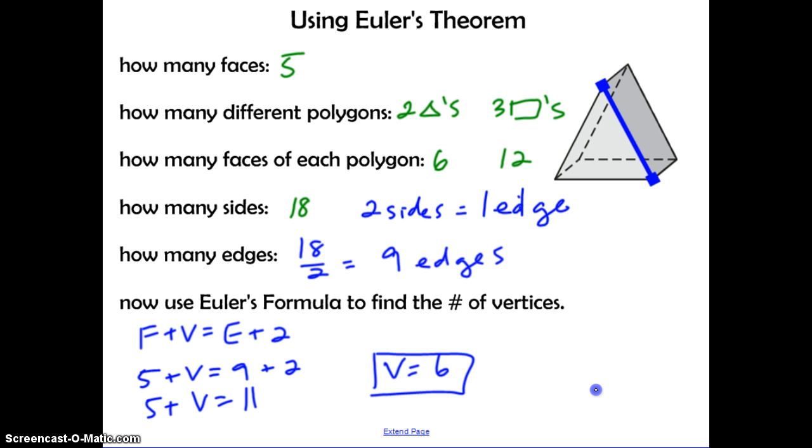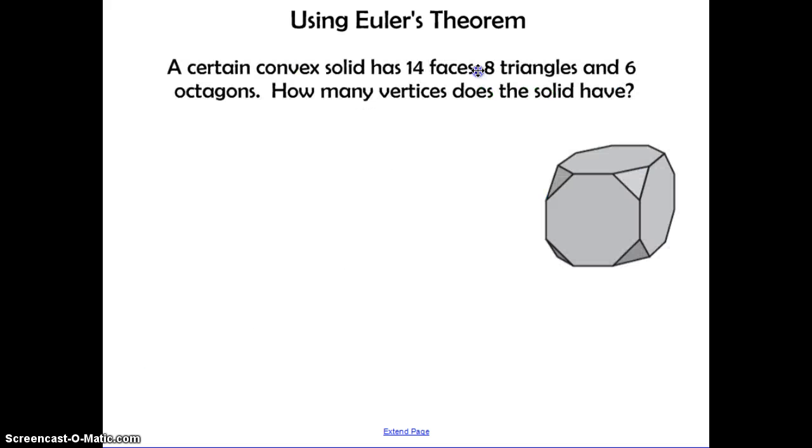So I need you to remember this process, because we're going to do the next problem together, and this one's not going to be as guided, and I just want you to remember the steps. So we need to use Euler's theorem. A certain convex solid has 14 faces, eight triangles, and six octagons. How many vertices does the solid have? Don't try to count the number of edges, vertices, and faces, and imagine what's along the back. You want to be able to do this without a diagram at all. So we know that we eventually want to get to Euler's theorem, which is faces plus vertices equals edges plus two. Now, we need to find the number of vertices. That means we can calculate the faces and the edges based on the information we're given.